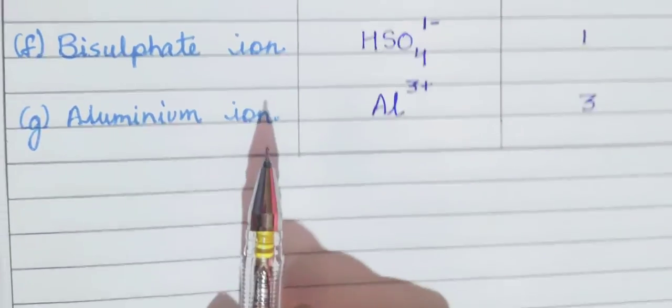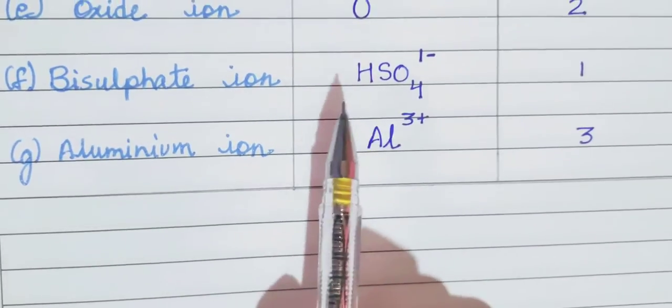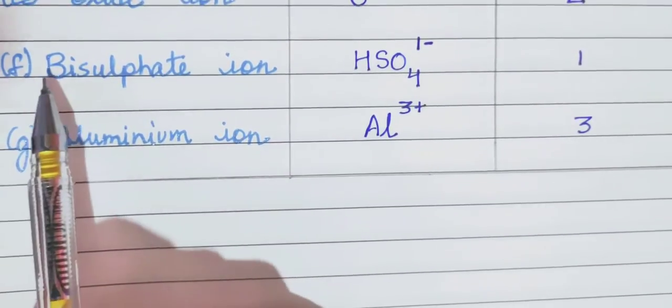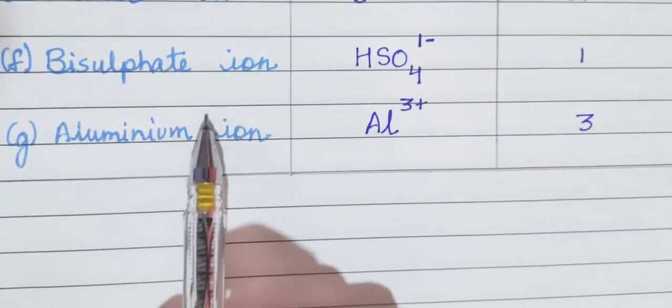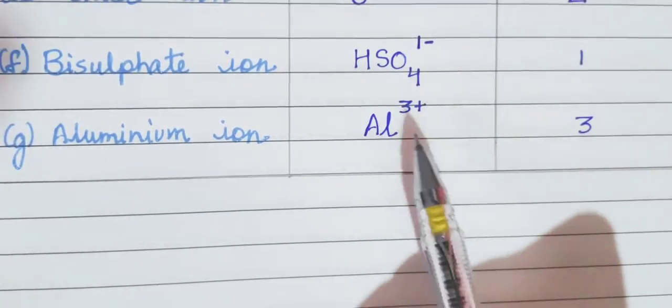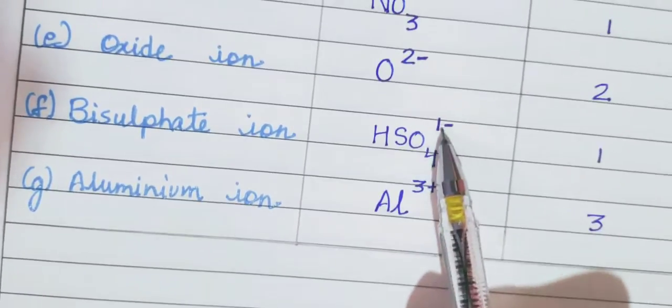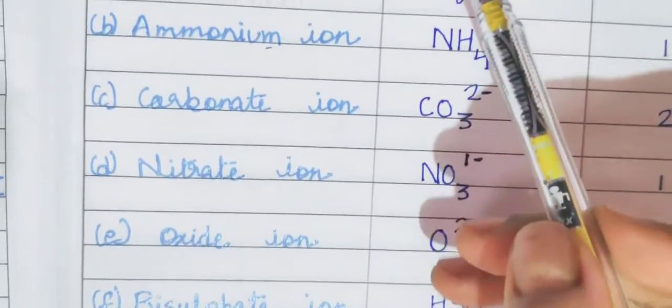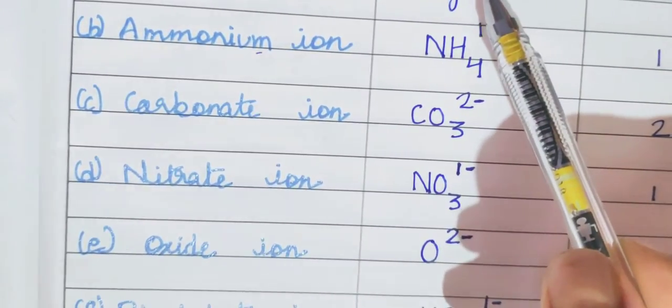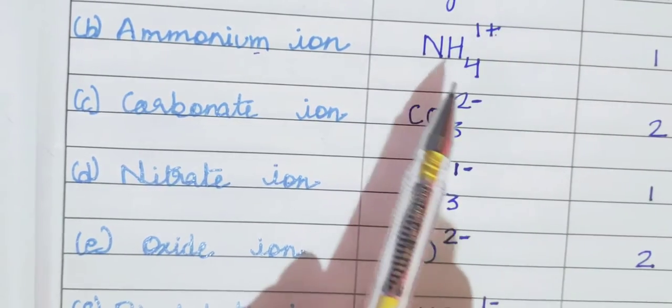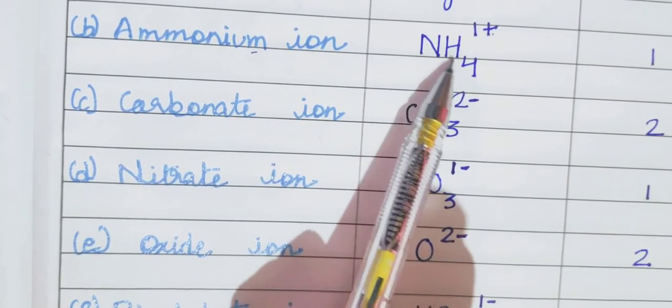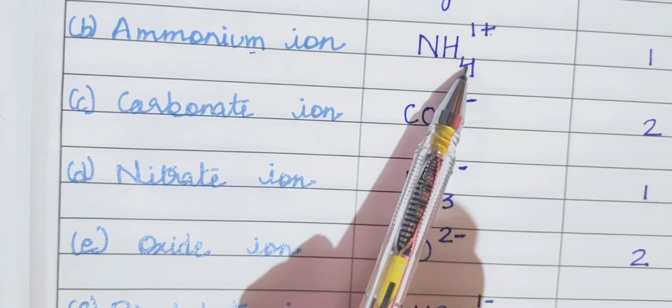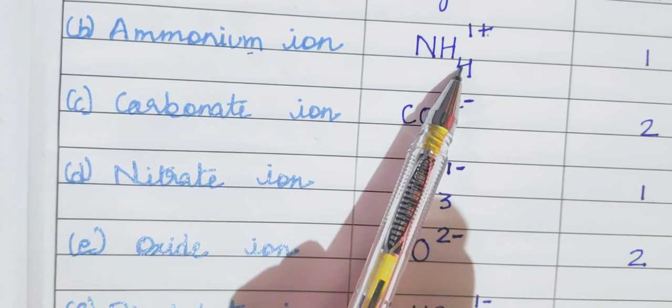So in this way, you are going to write down the symbols or the formulae of the ions and the radicals. And you are going to write down the valencies on the top right hand side. What is that called? That is called superscript. And this number of atoms, for example NH4, hydrogen 4, this is written as subscript.